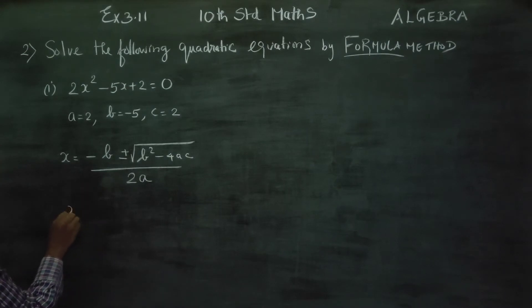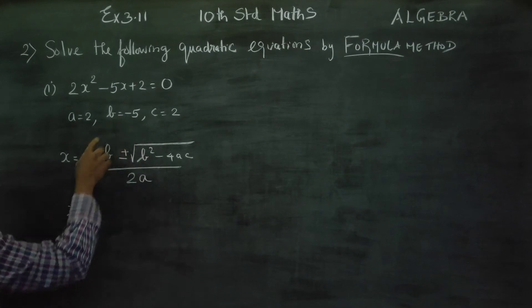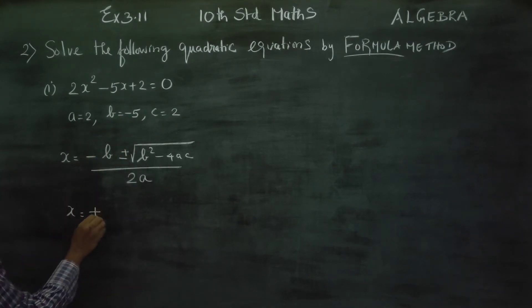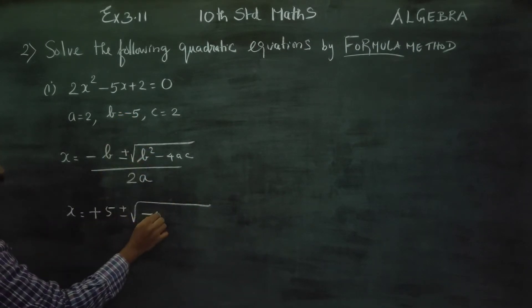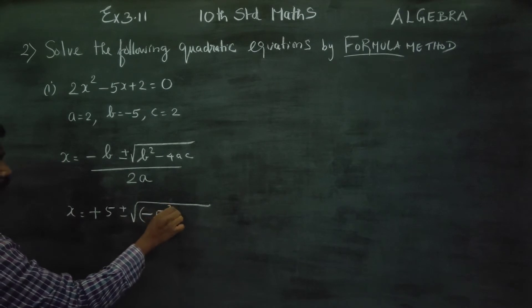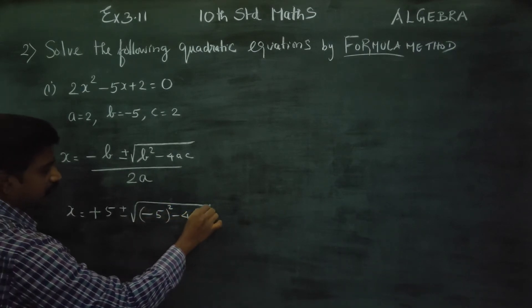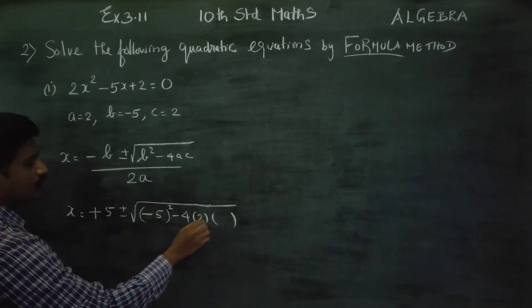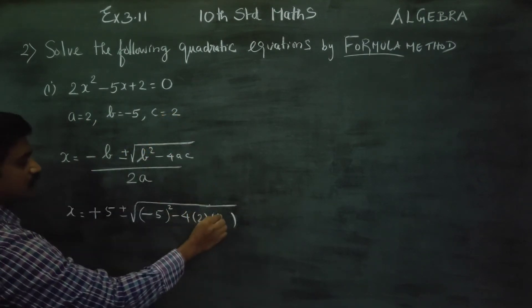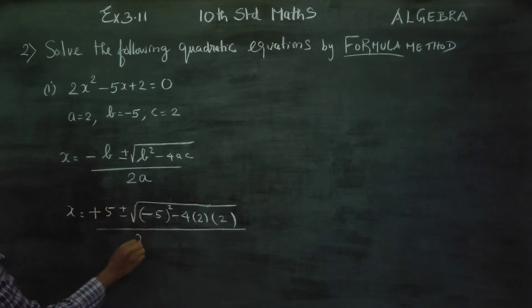Minus minus becomes plus. Then plus 5. Plus or minus square root of b square. b square is minus 5 squared. Minus 4ac. What is a? A is 2. What is c? C is also 2. 2 into a, what is a? 2.